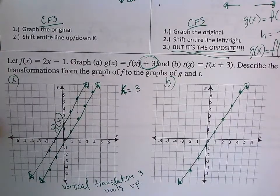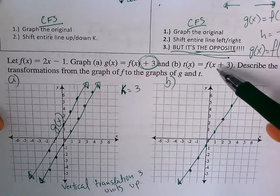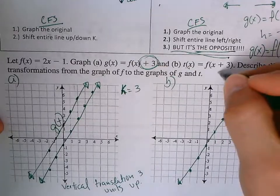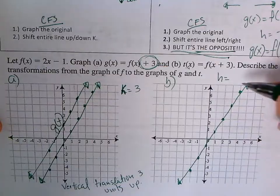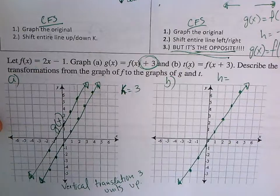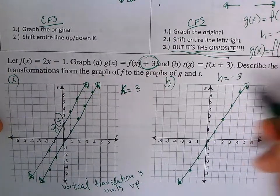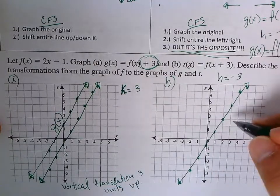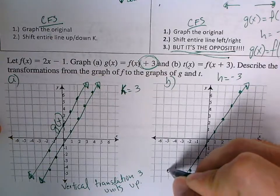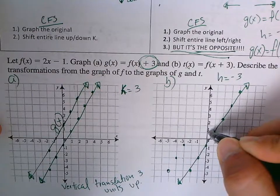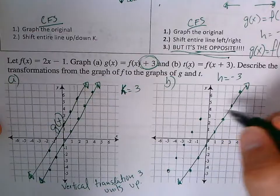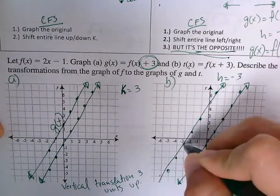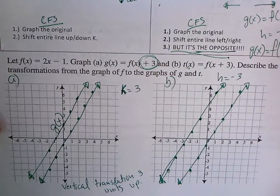For part B, notice the number is inside the parentheses, so my points will move either left or right depending on the value of h. Remember, h is always the opposite of what I see inside the parentheses, so h will be negative 3. That means each point will move three units to the left. I'll move each of these points one, two, three units to the left.